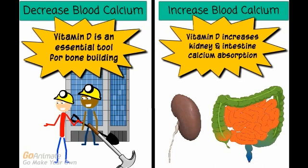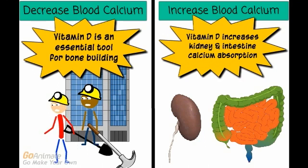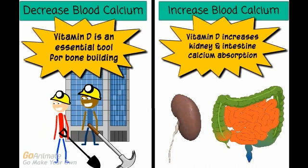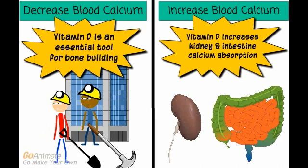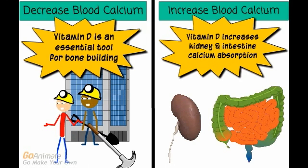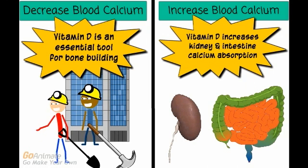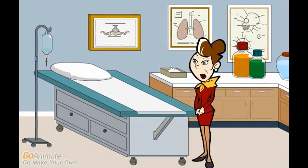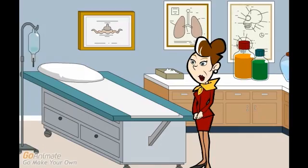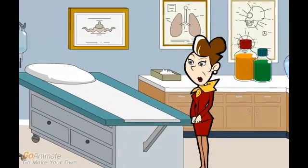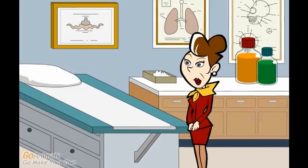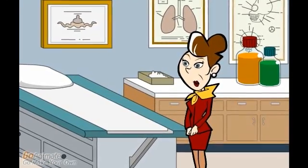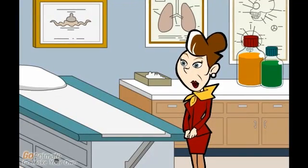Let's review the different roles of vitamin D. Vitamin D is an essential tool for building bones, and when used to help build bones, this decreases blood calcium levels. But vitamin D is also important in increasing kidney and intestine calcium absorption, and when it serves this function, it acts to increase blood calcium levels. The purpose of this feedback loop is to ensure that calcium levels within the bloodstream remain constant — whether increasing or decreasing, the goal is to reach homeostatic balance.